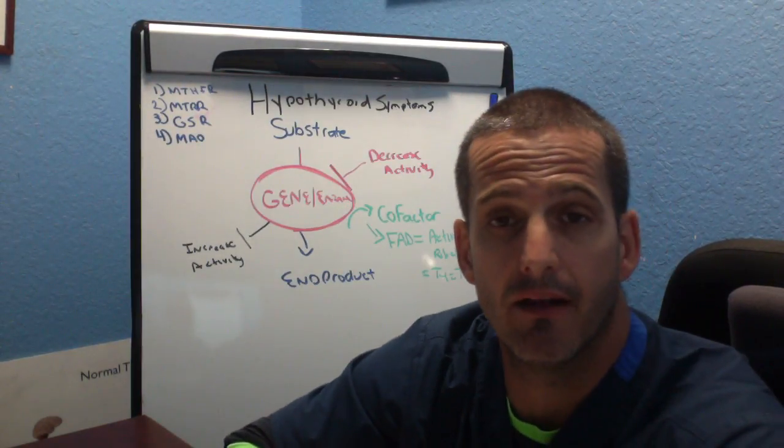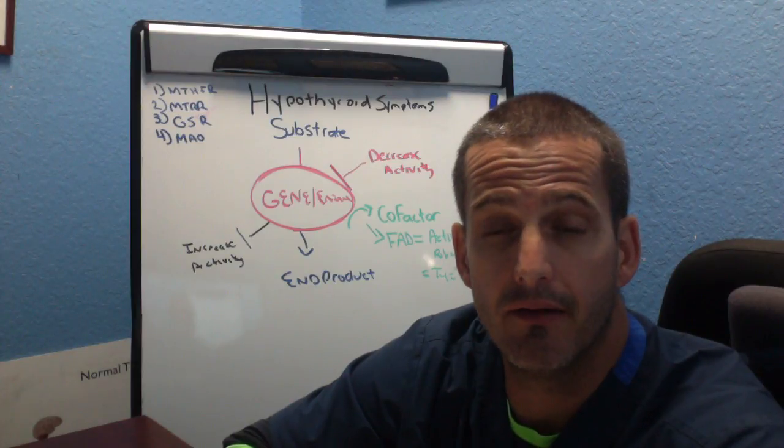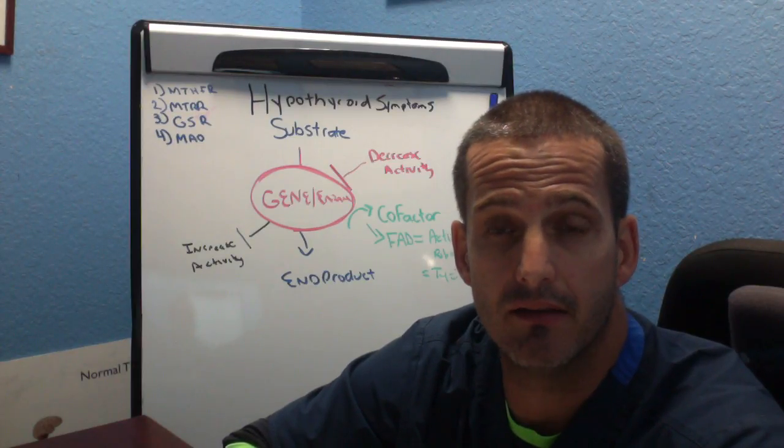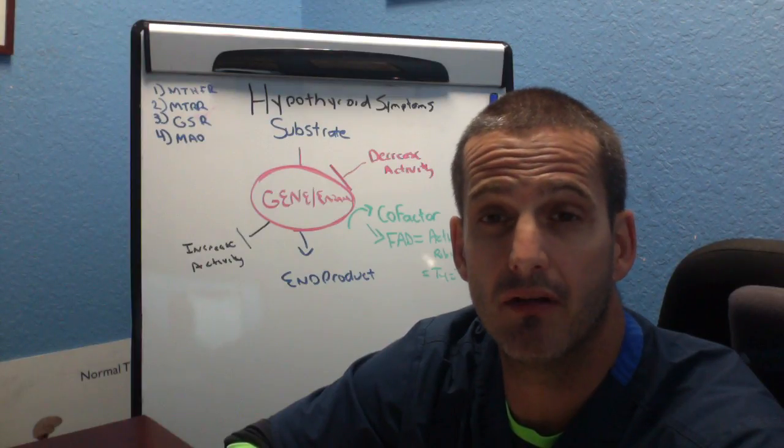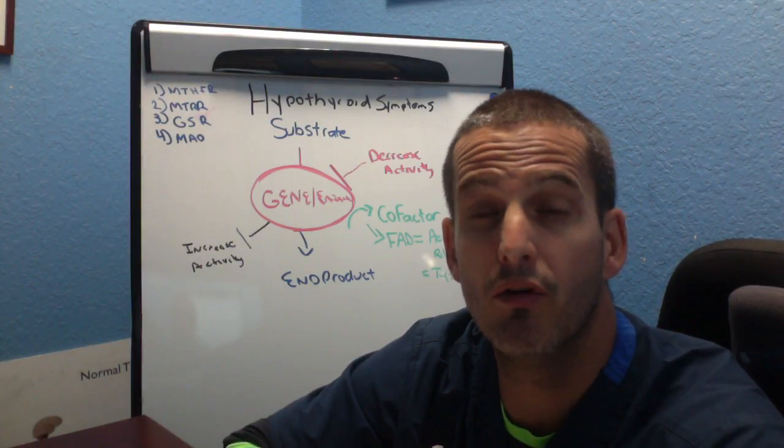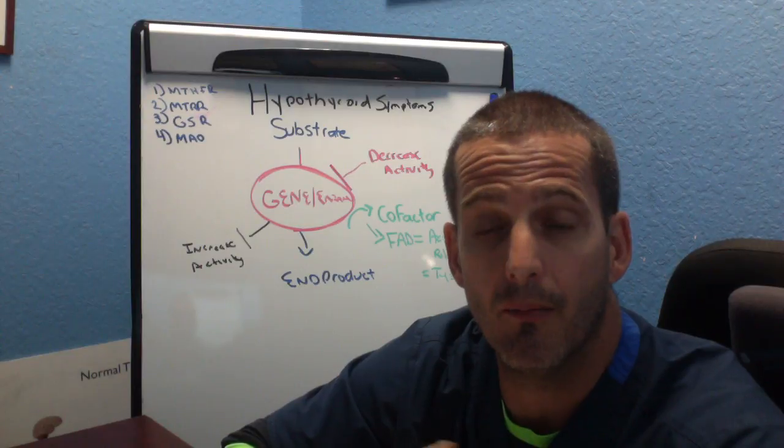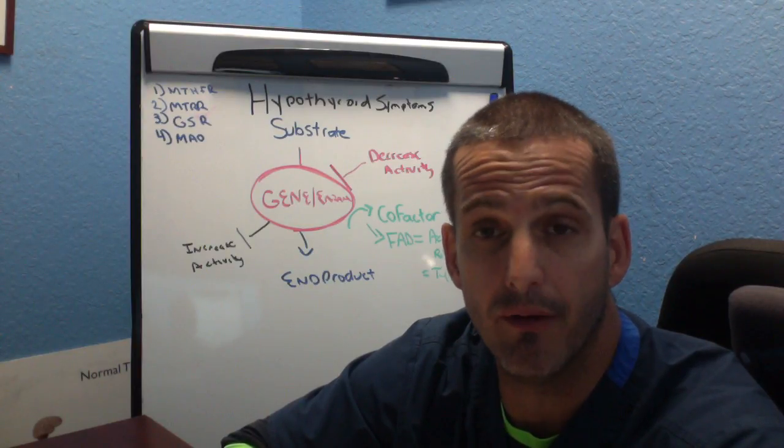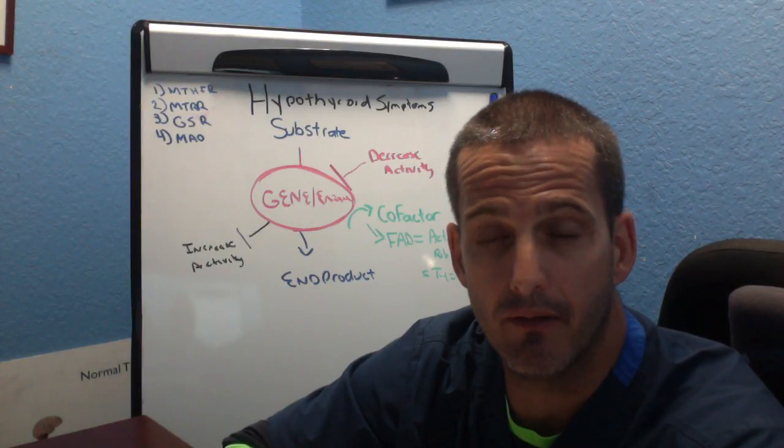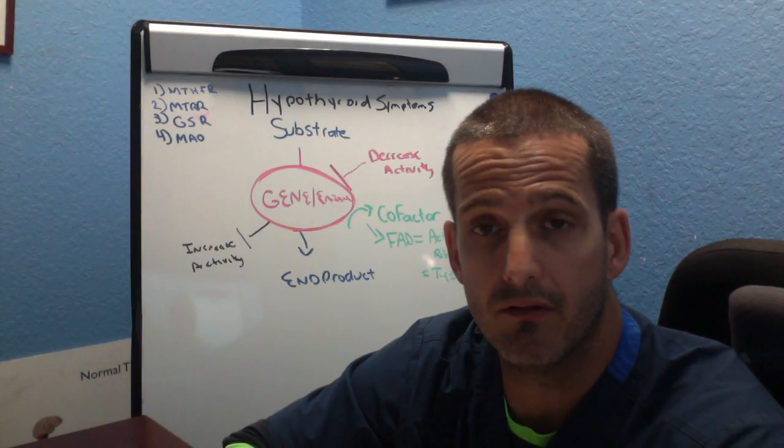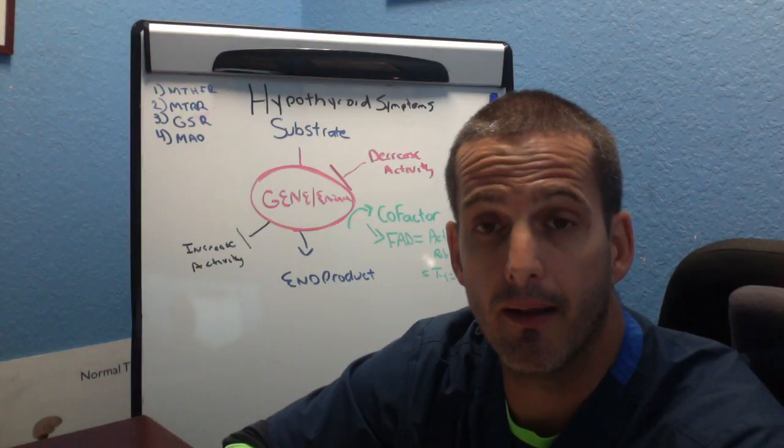GSR, that is the recycling of glutathione. Glutathione is very important for antioxidants. So if you have an infection, inflammation, or heavy metal toxicities, then you need glutathione to reduce that free radical oxidative buildup. And if you have a hypothyroid, then you are not going to have the ability to recycle glutathione.